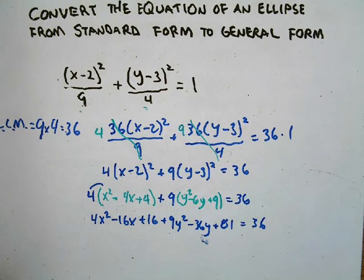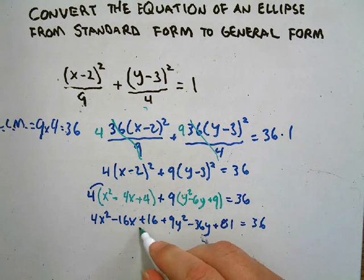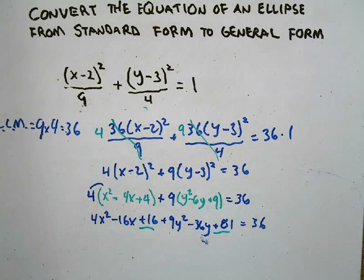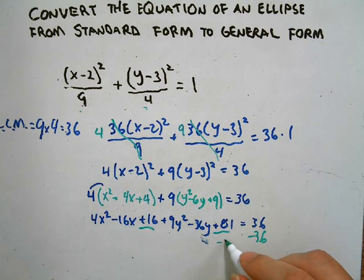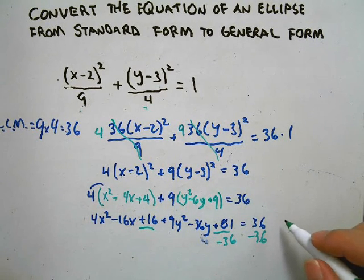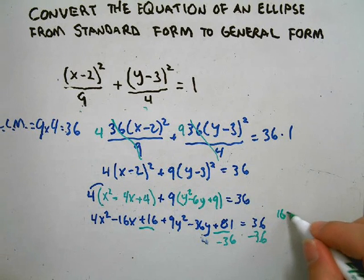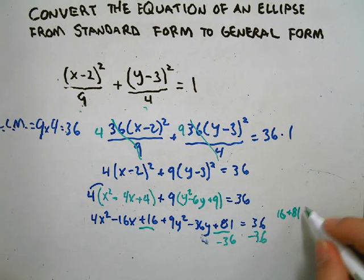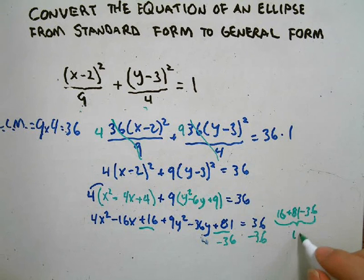So now we're just about done. We have to combine the constants and subtract and set it equal to zero. We'll have a -36 over here too. So off to the side I have 16 + 81 - 36, and that all equals a positive 61.